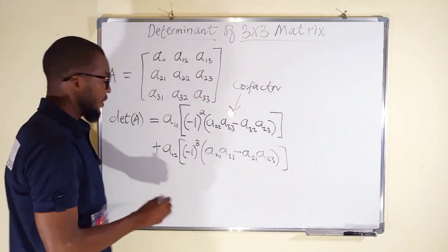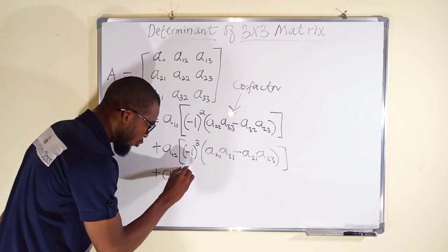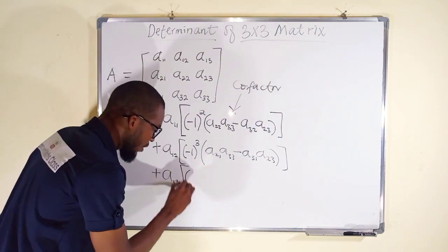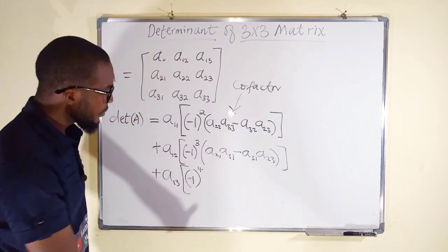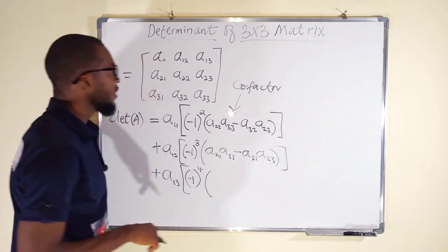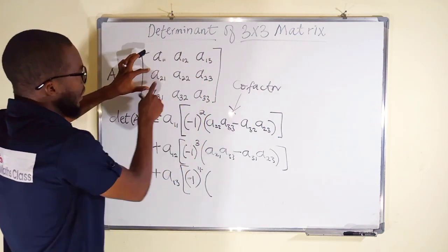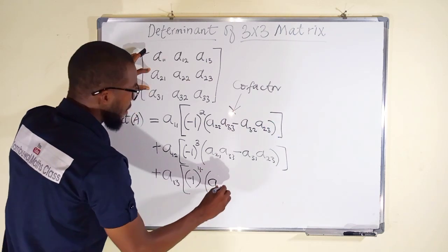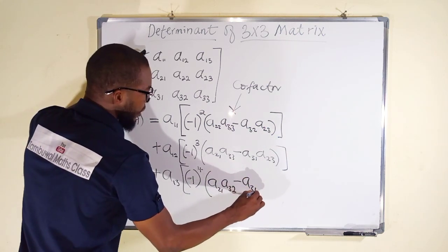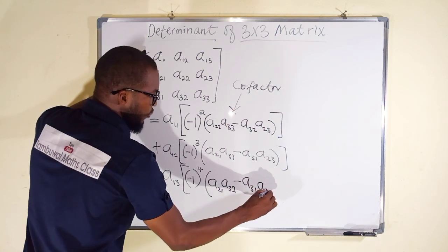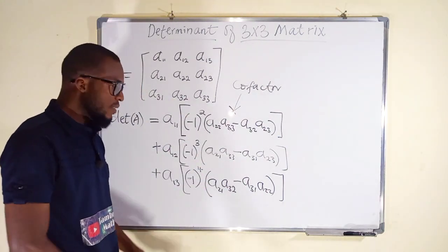Then the last element — there are three — so we add again. We take A13 and multiply by its cofactor: negative 1 raised to the power of 1 plus 3, which is 4. Multiply by the determinant after striking out the row and column corresponding to that element. Striking those out, the four remaining elements give us A21 multiplied by A32, minus A31 multiplied by A22. Then you simplify and obtain your determinant.